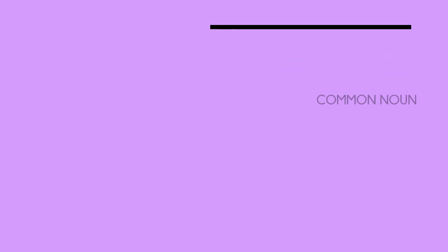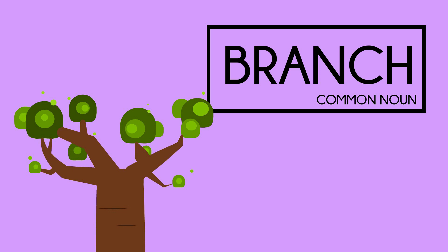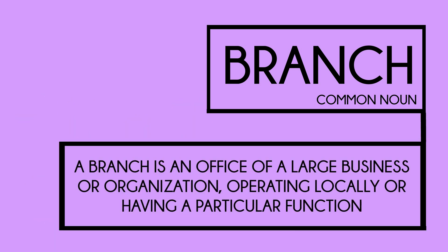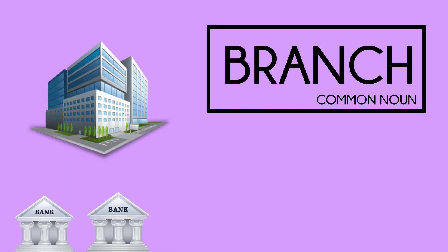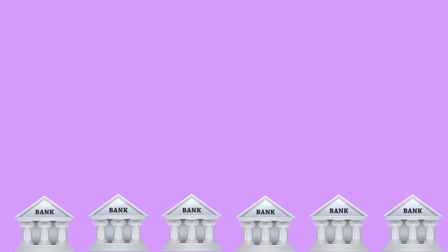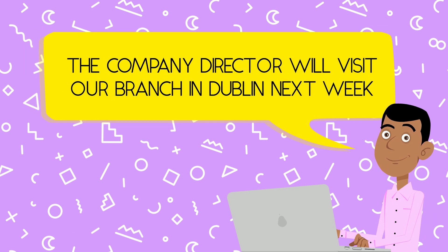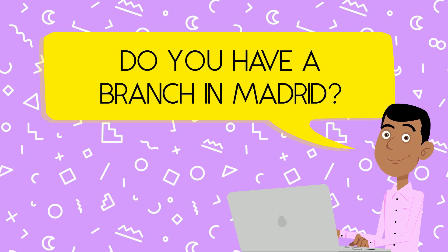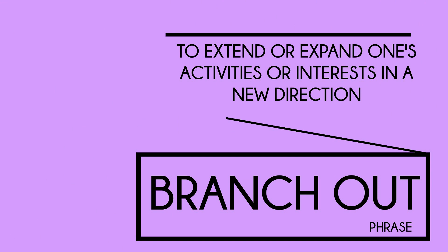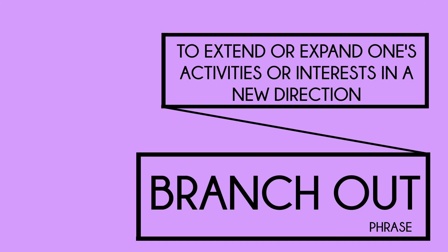You may know our next word, 'branch', as relating to trees, but we also have a business English definition. A branch is an office of a large business or organization operating locally or having a particular function. Think of a bank having its headquarters in London and then having lots of different branches around the world. Example sentences: the company director will visit our branch in Dublin next week. Do you have a branch in Madrid? In business English, we also have the phrase 'to branch out', which means to extend or expand one's activities or interests in a new direction.